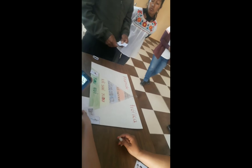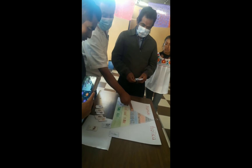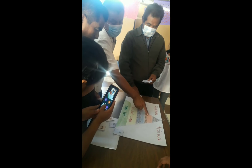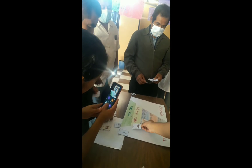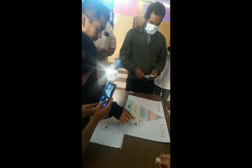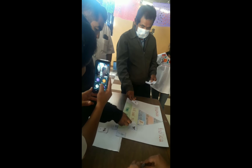La lombriz vive en la tierra. Les explico brevemente: estos son productores, aquí son herbívoros, carnívoros, carroñeros, y aquí la parte de los que descomponen la materia, como los microorganismos y hongos.